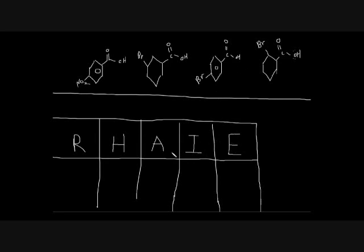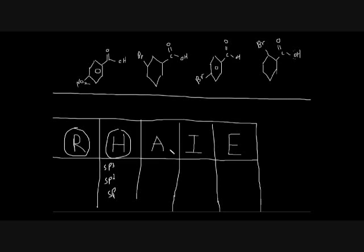There are five key factors. R stands for resonance. Hybridization refers to whether the atom is sp3, sp2, or sp. A is aromaticity — if the conjugate base or conjugate acid breaks the aromaticity, the original molecule is not very basic or acidic. Aromaticity is usually used when comparing basicity. I is the inductive effect.